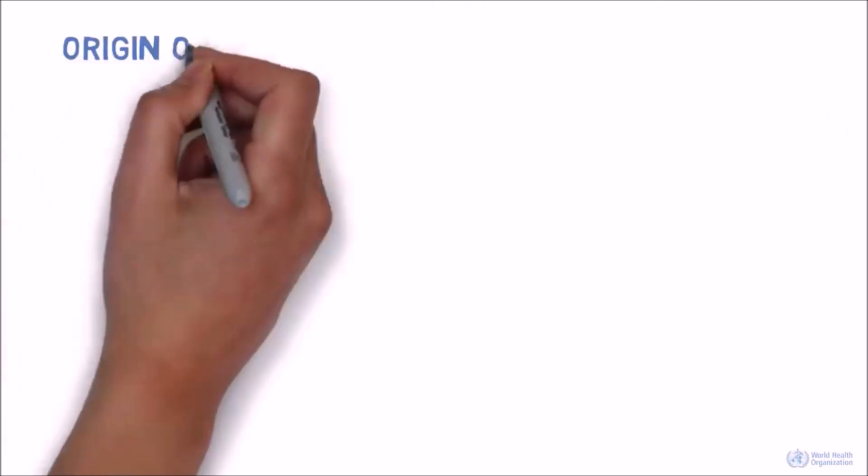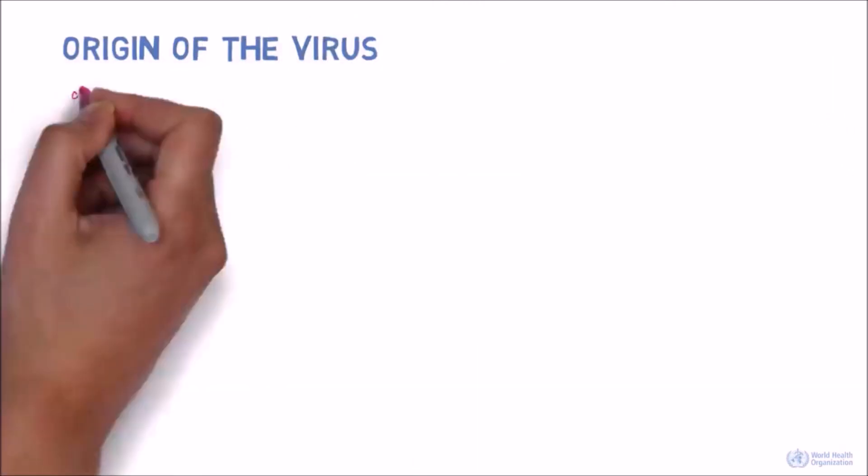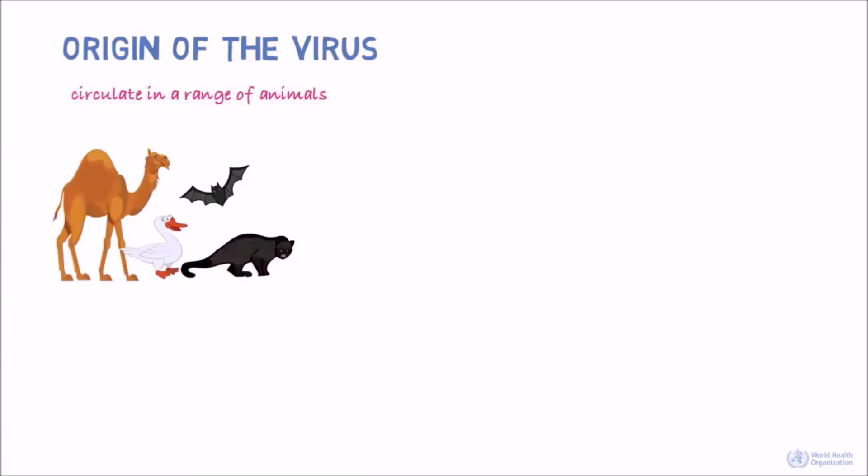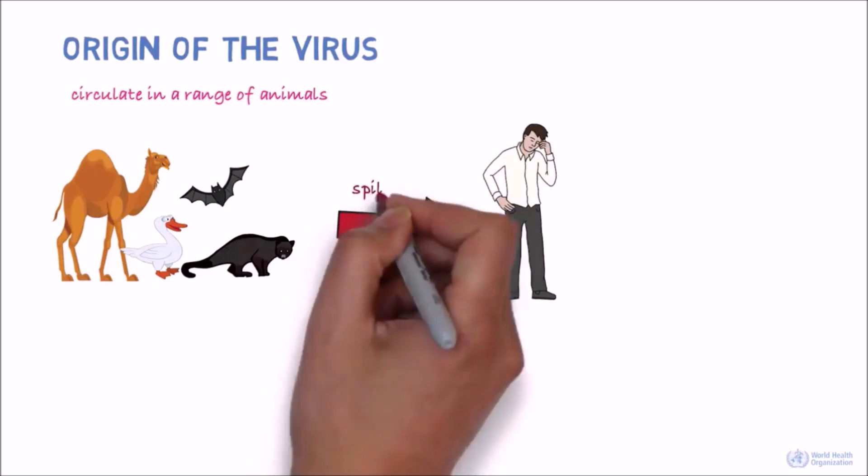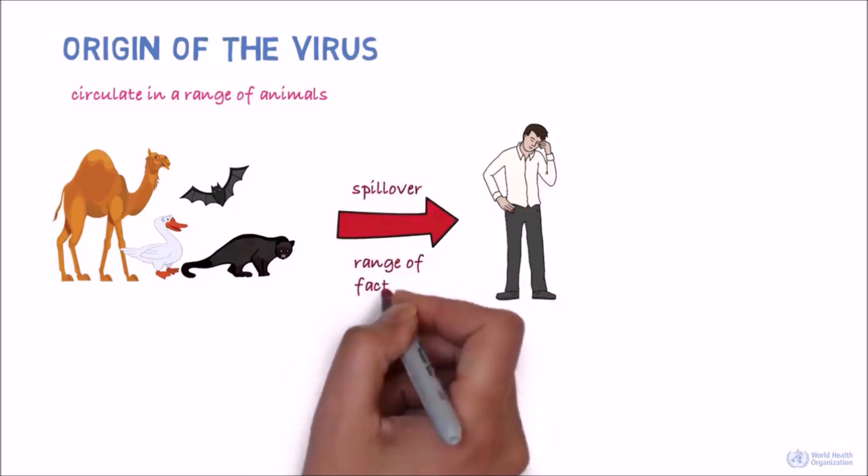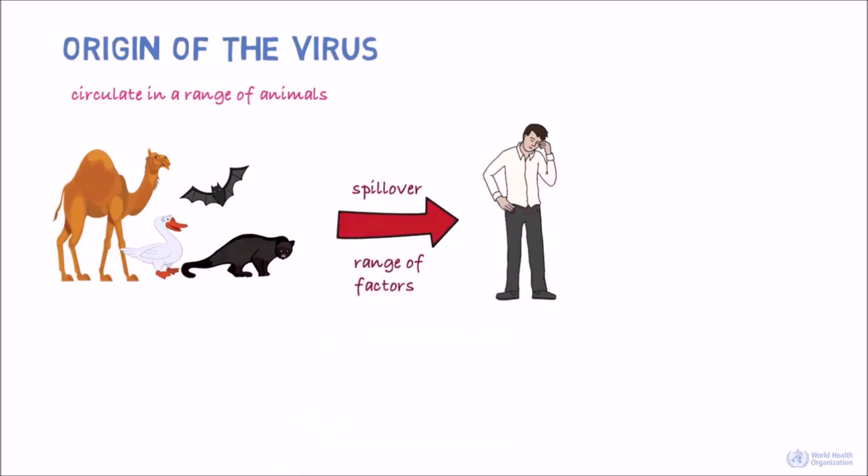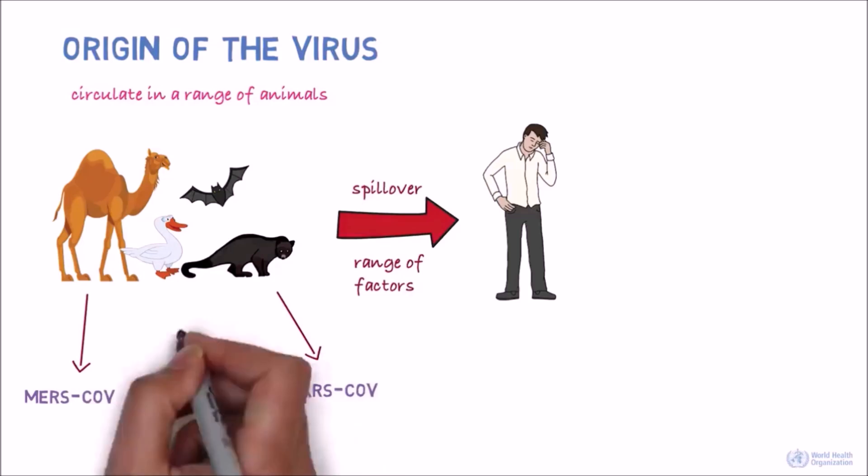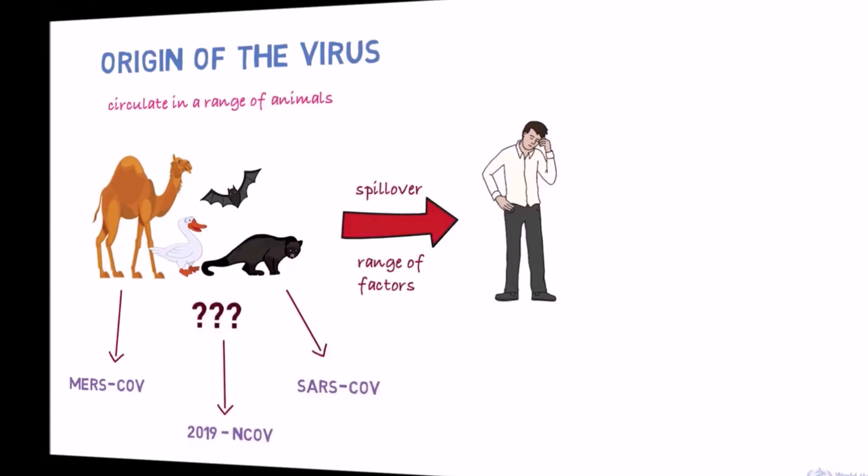So where did the virus come from? It's known that coronaviruses circulate in a range of animals. Sometimes these viruses can make the jump from animals to humans. This is called a spillover and could be due to a range of factors, such as mutations in the virus or increased contact between humans and animals. For example, MERS-CoV is known to be transmitted from camels and SARS-CoV from civet cats. The animal reservoir of the 2019 novel coronavirus is not known yet.